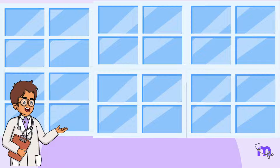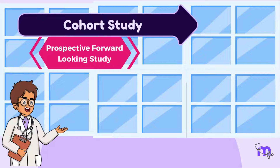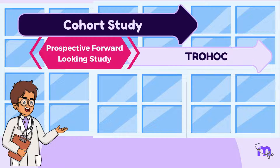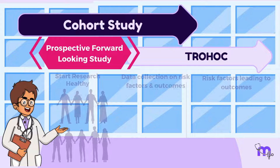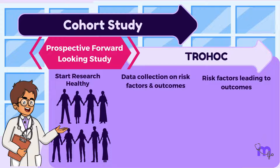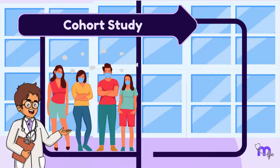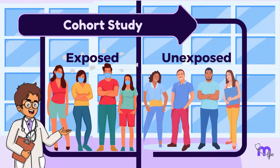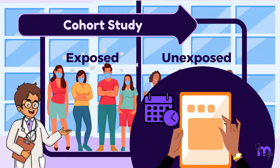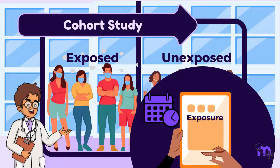Moving on to the next design: cohort studies. Cohort is 'trohoc' spelled backward — therefore, it is the opposite of case control studies. In this type of study, I select a comparison group or control group, but the disease has not yet occurred. I compare the experience of one group exposed to the risk factor (the exposed group) with that of the group not exposed (the control group), and then follow them up for years to check for the association between the exposure and outcome.